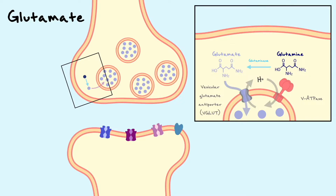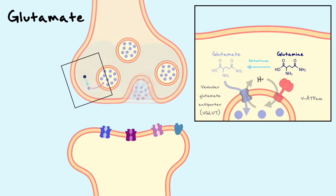Now that the vesicles are full of glutamate, they can be released into the cleft by the same general principles covered in the vesicle cycle section. The action potential depolarizes the cell, opens voltage-gated calcium channels, which fuses the vesicles and releases glutamate into the cleft.